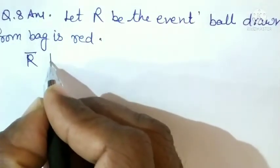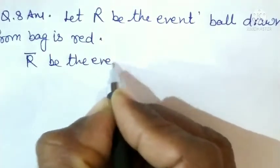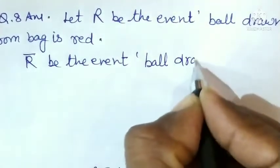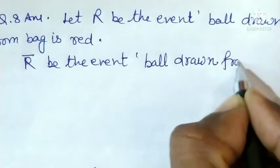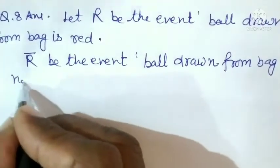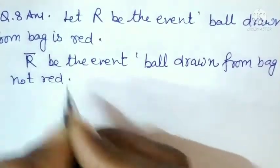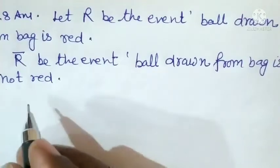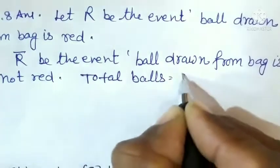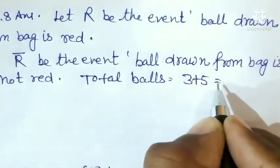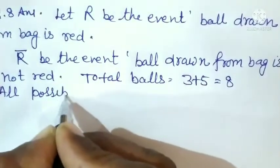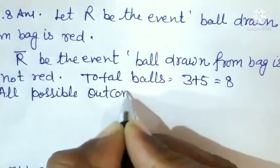R complement be the event that the ball drawn from the bag is not red. یہ ہو جائے گا ہمارے پاس۔ Total balls ہمارے پاس ہیں 3 red + 5 black = 8 balls۔ All possible outcomes = 8.